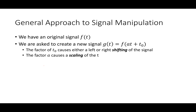If T naught is greater than zero, which direction are we moving? To the left. We call this a time advance, because features in the original F of T happen a little bit earlier in time. And if T naught is less than zero, the shift is to the right — we call this a delay.